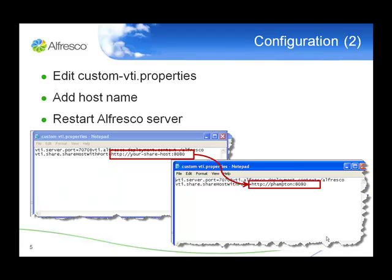Then you're going to edit one of those. You need to understand the server name of where the CIFS server is running. So you edit the VTIProperties file and add your host name. My particular PC is phampton, so I just replace the your-share-host string with phampton, save that file, and then restart the server. Let's look at this in action with a live demo.